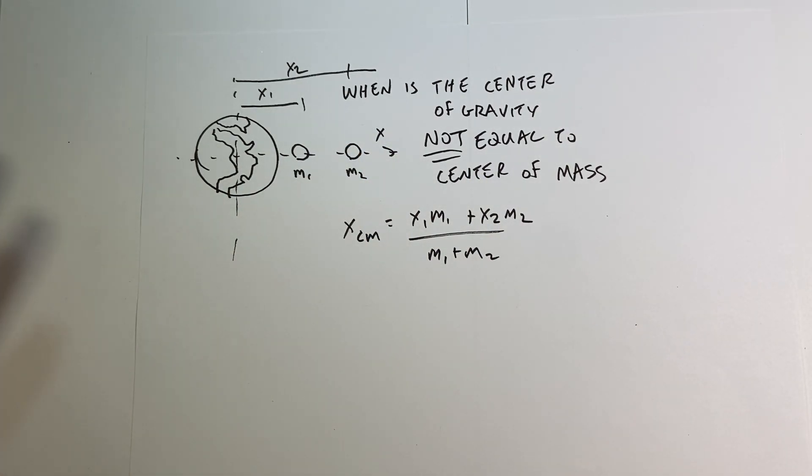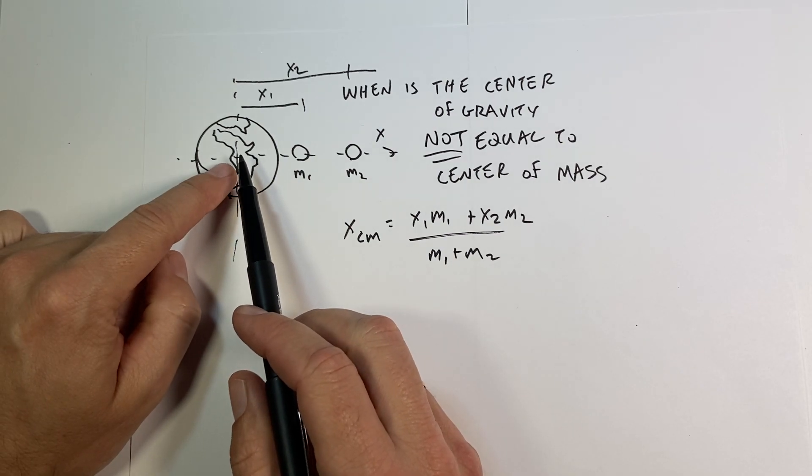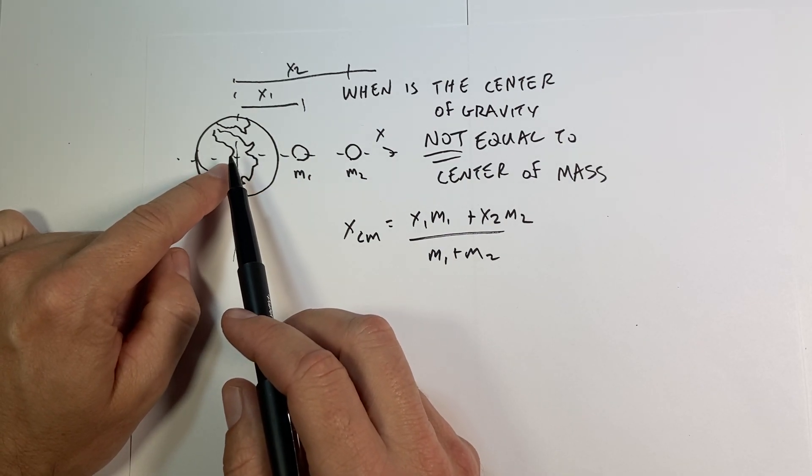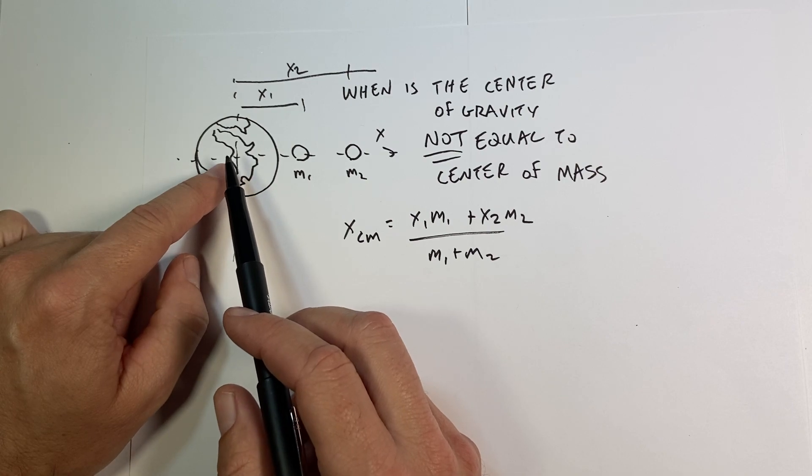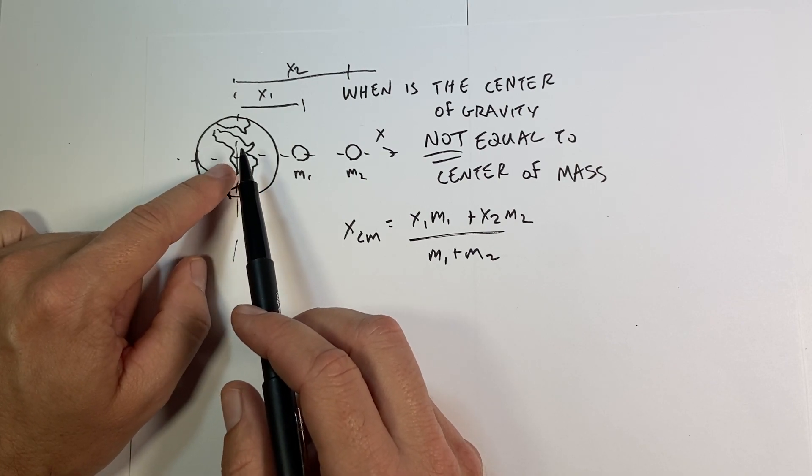I should point out, I didn't put this in the last video: it doesn't matter where your origin is. If I move the origin somewhere else, I do get a different center of mass value, but it's in the same location.